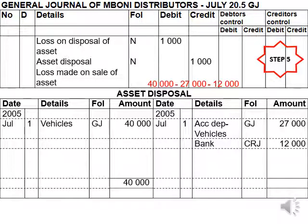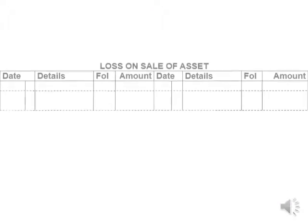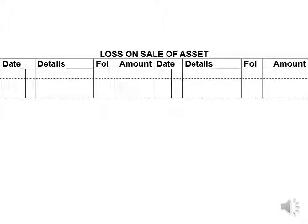The other way to determine the result is to balance the asset disposal account. The debit side totals $40,000, compared to $39,000 on the credit side, which means the missing amount falls on the credit side. Whenever the missing amount is on the credit side, it is a loss on sale of asset. So the asset disposal account is credited with $1,000 and the loss on sale of asset account is debited with $1,000.